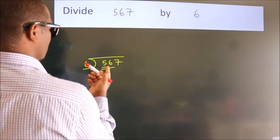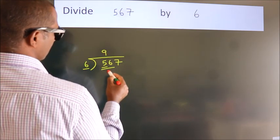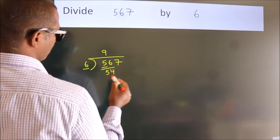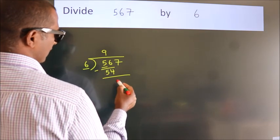A number close to 56 in the 6 table is 6 nines, 54. Now we should subtract. We get 2.